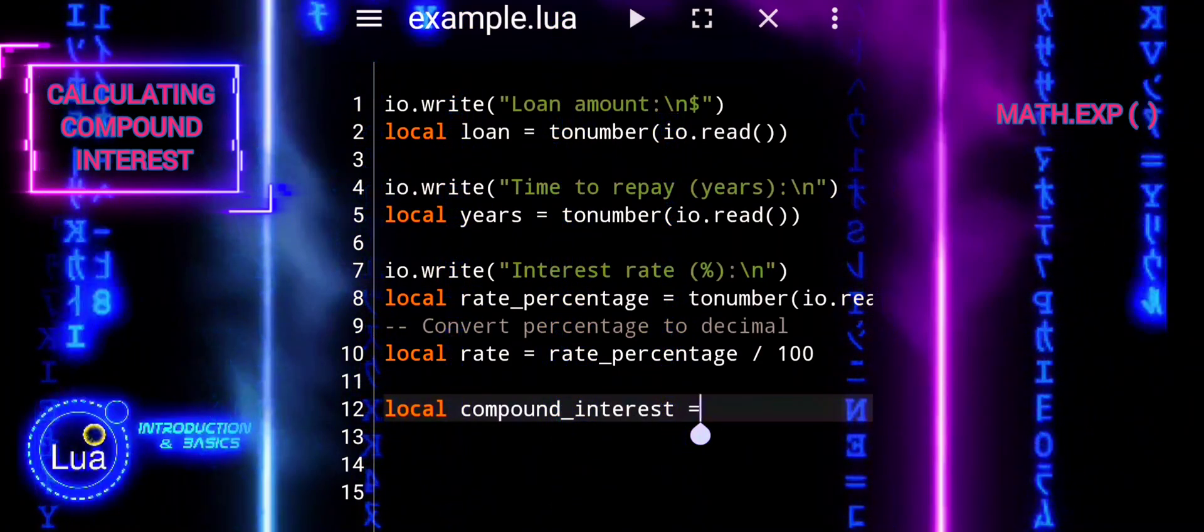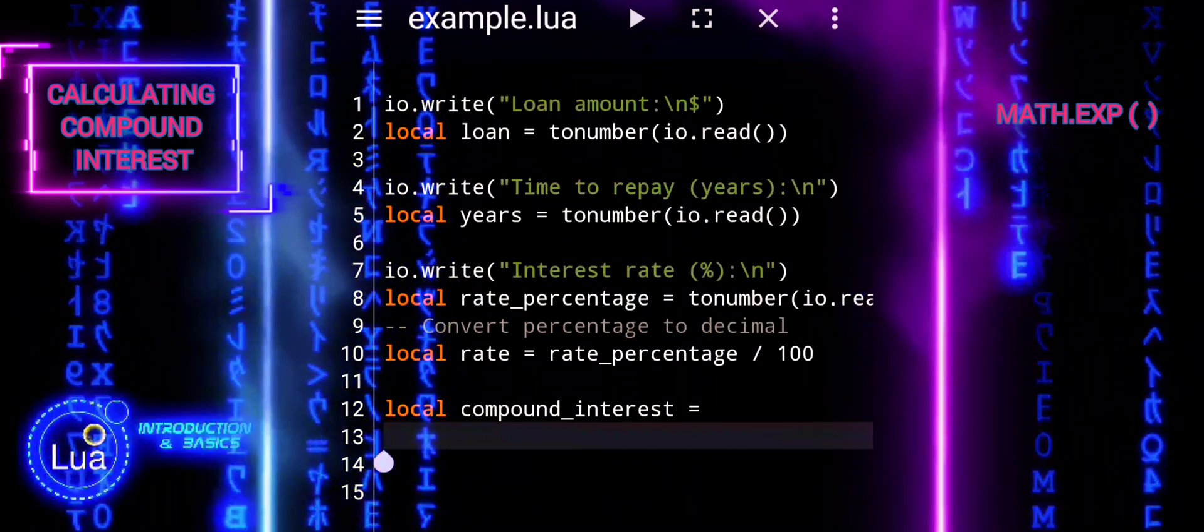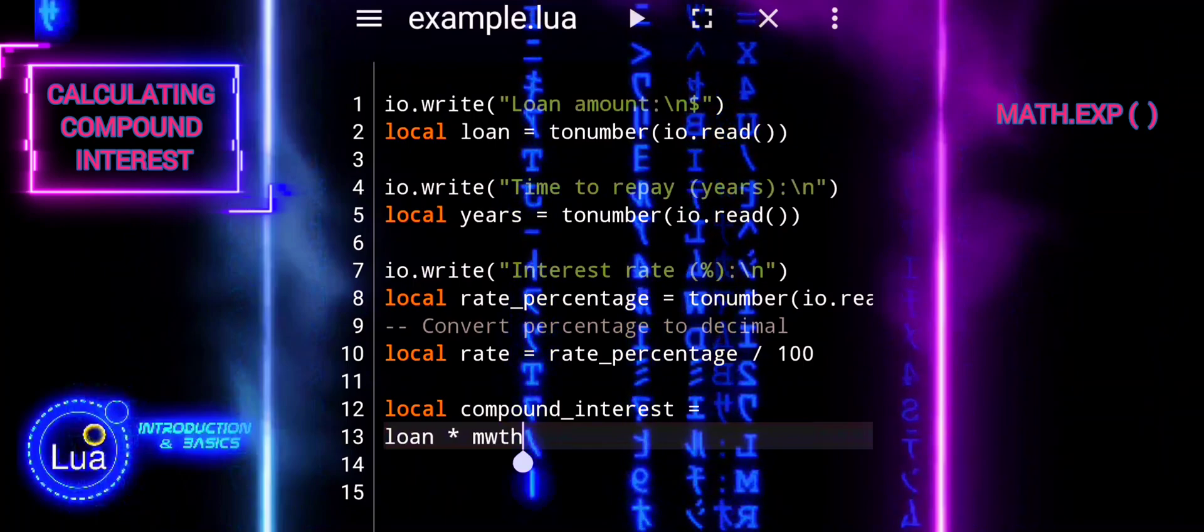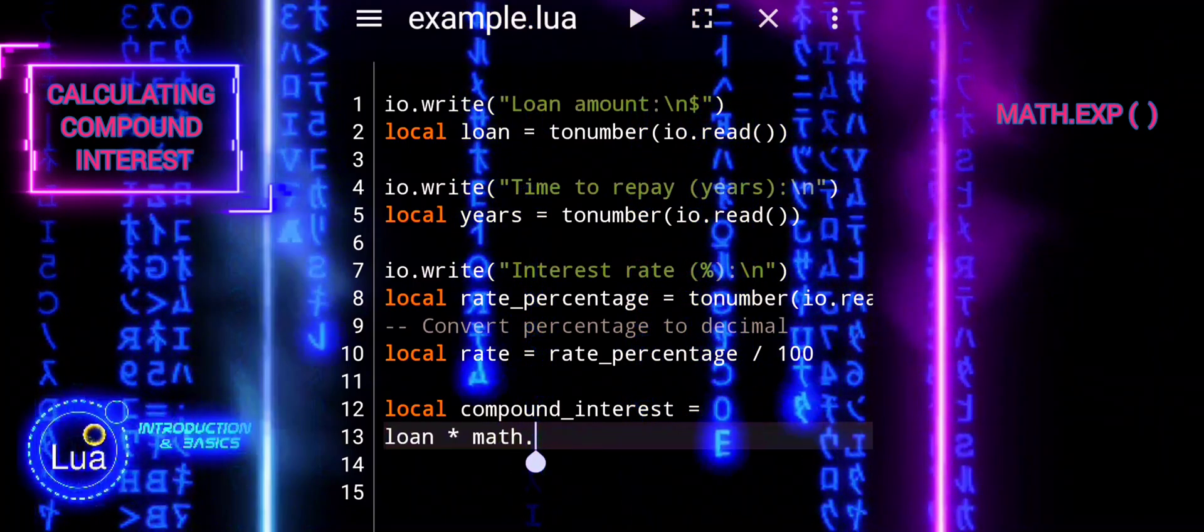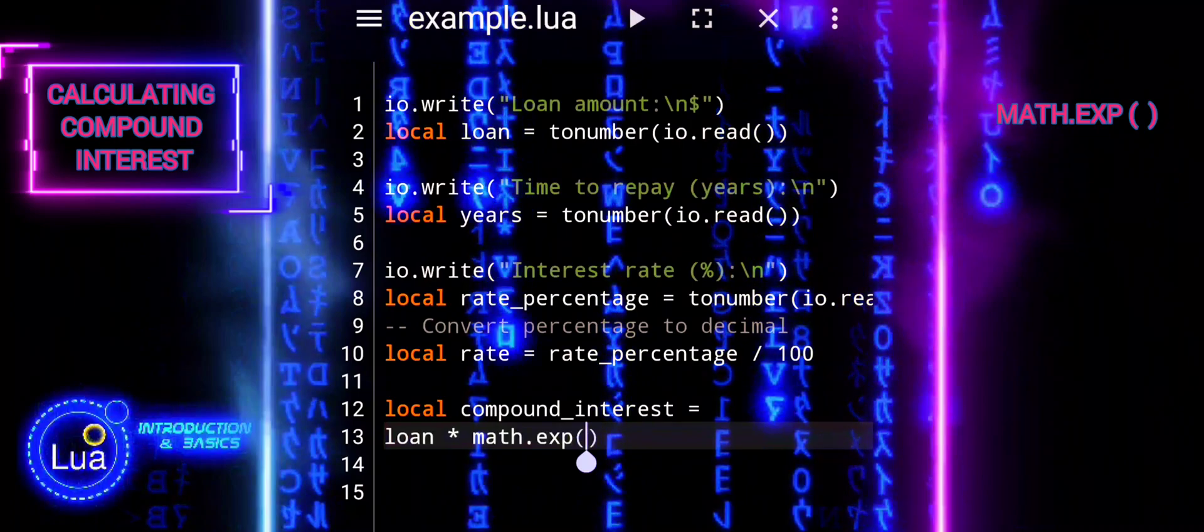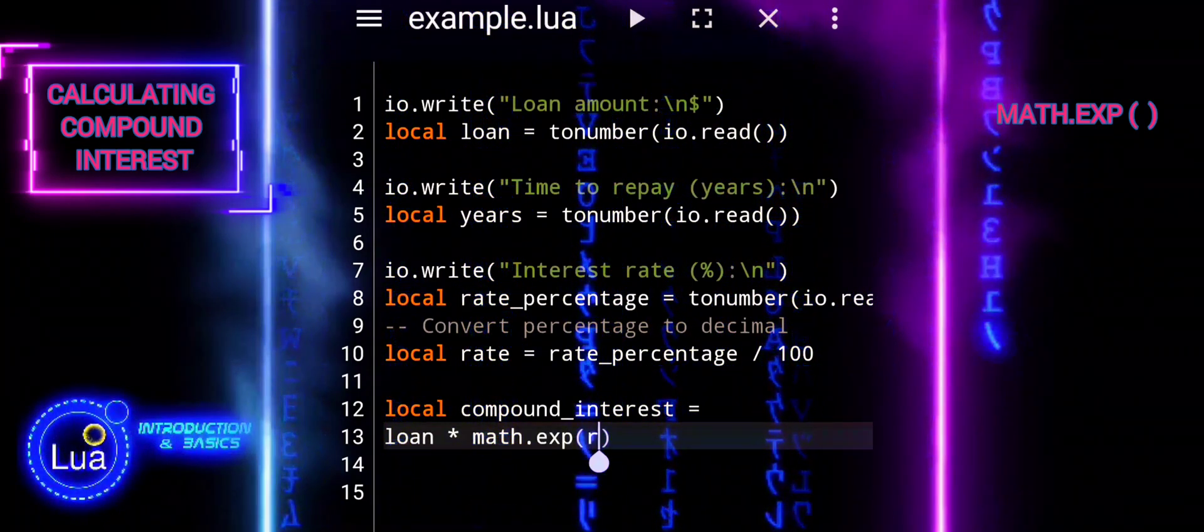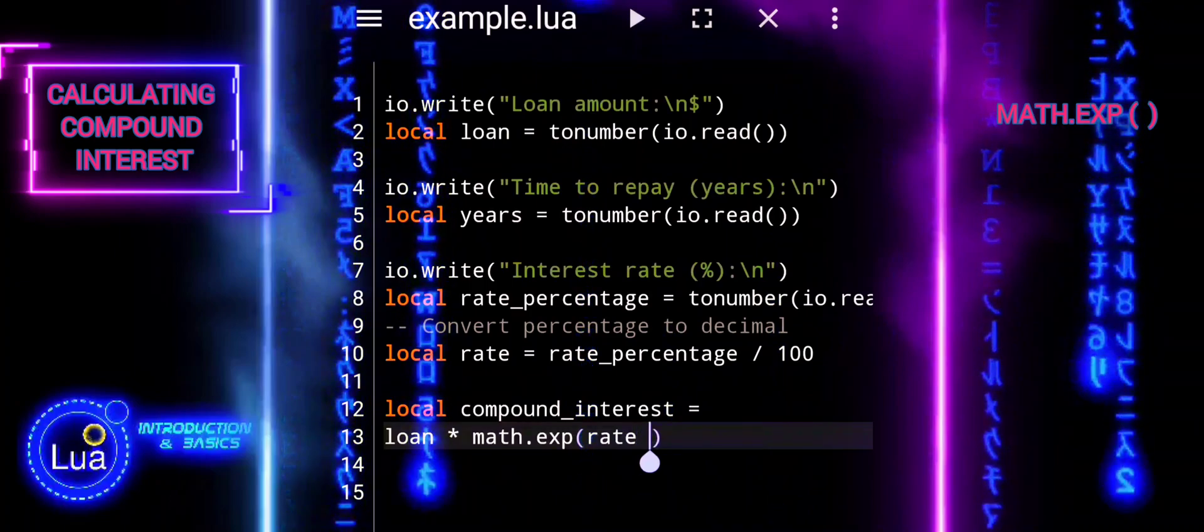In the subsequent code block, the compound interest on the loan is calculated using the formula for continuously compounded interest. The math.exp function raises Euler's number, e, to the power of the product of the interest rate and the duration to repay the loan in years.